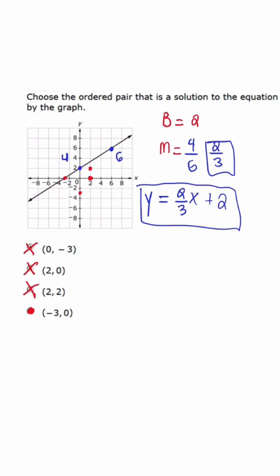And if we want to double check this, we're going to plug in the ordered pair (-3, 0).